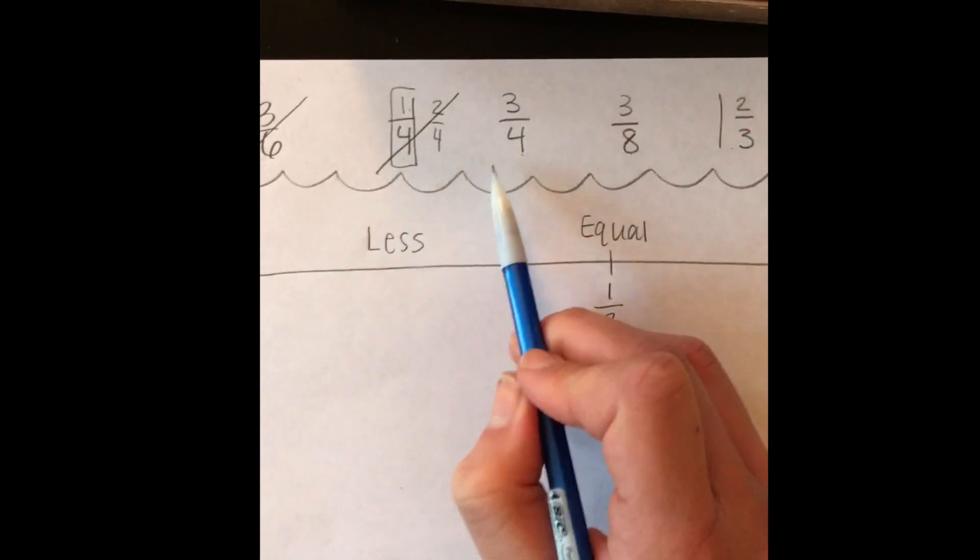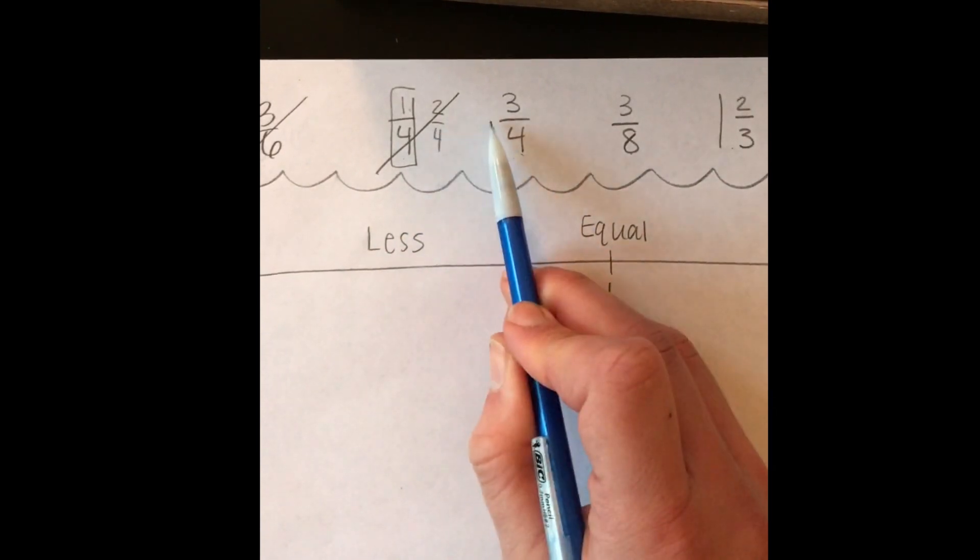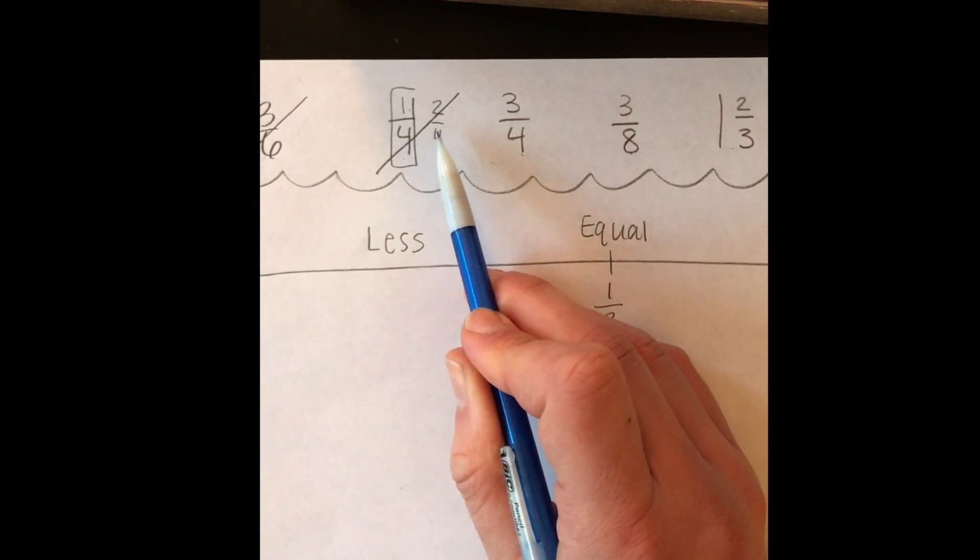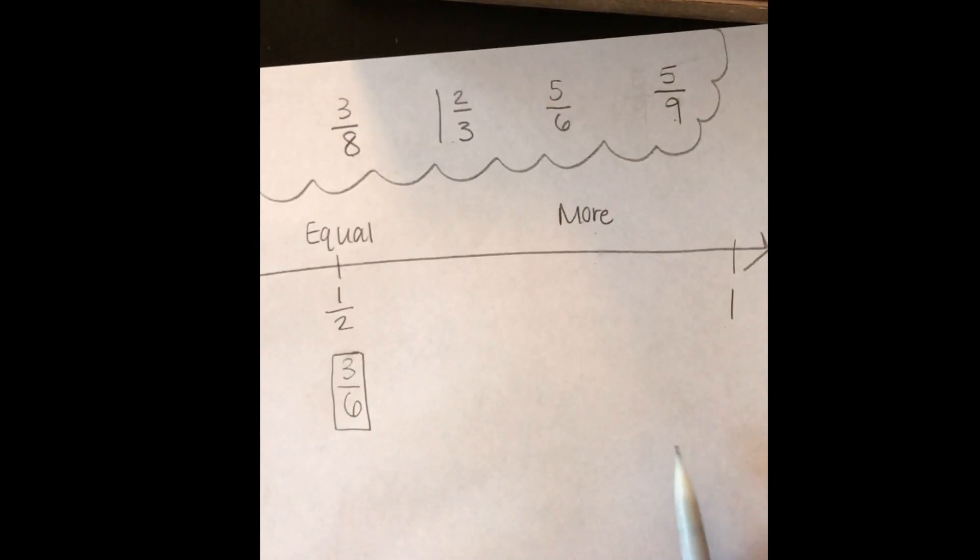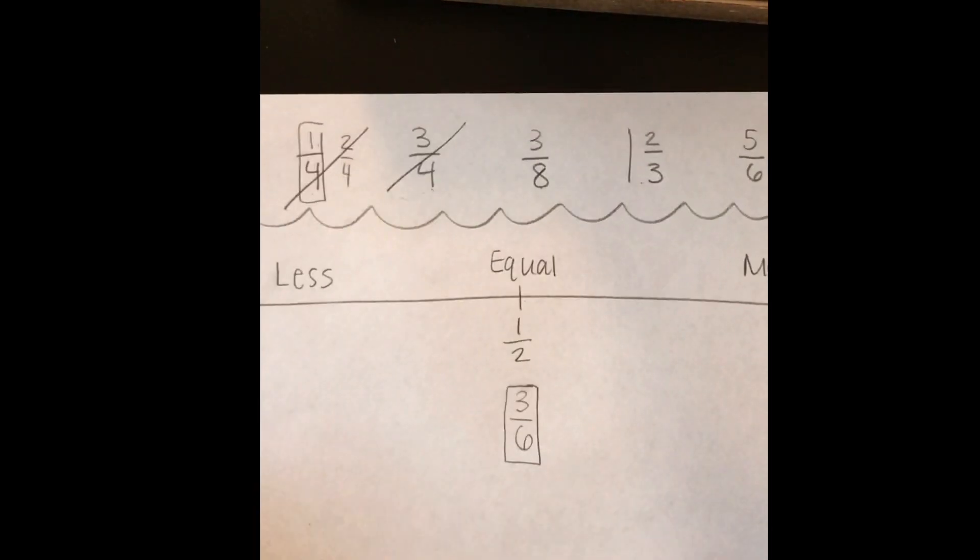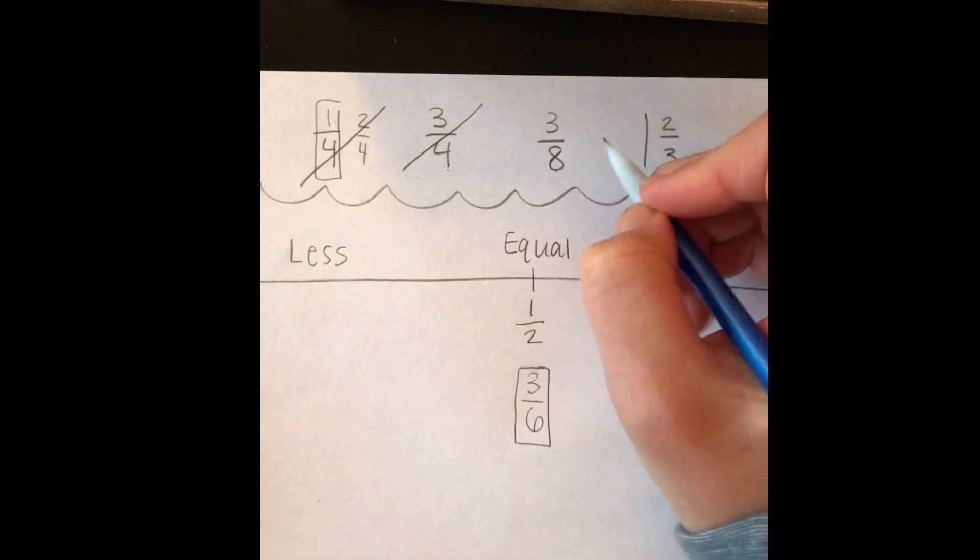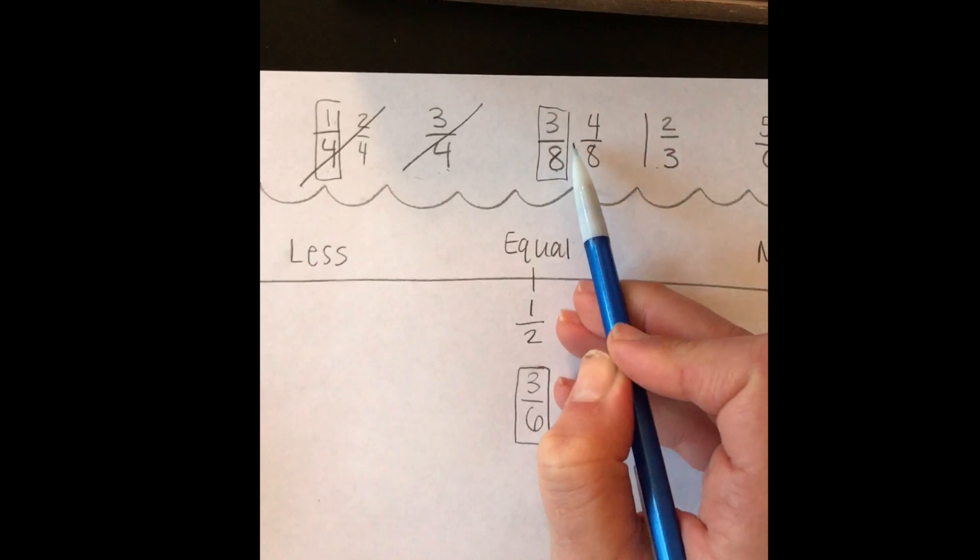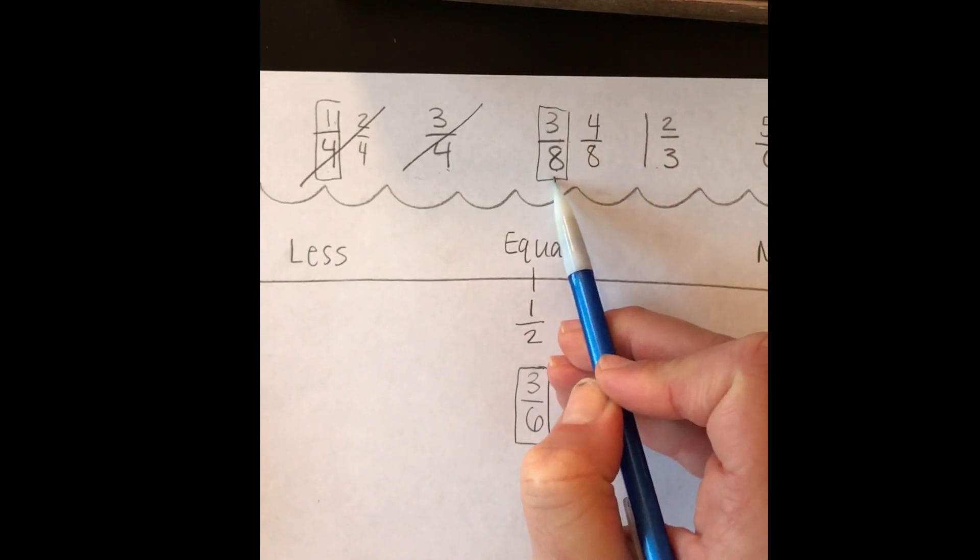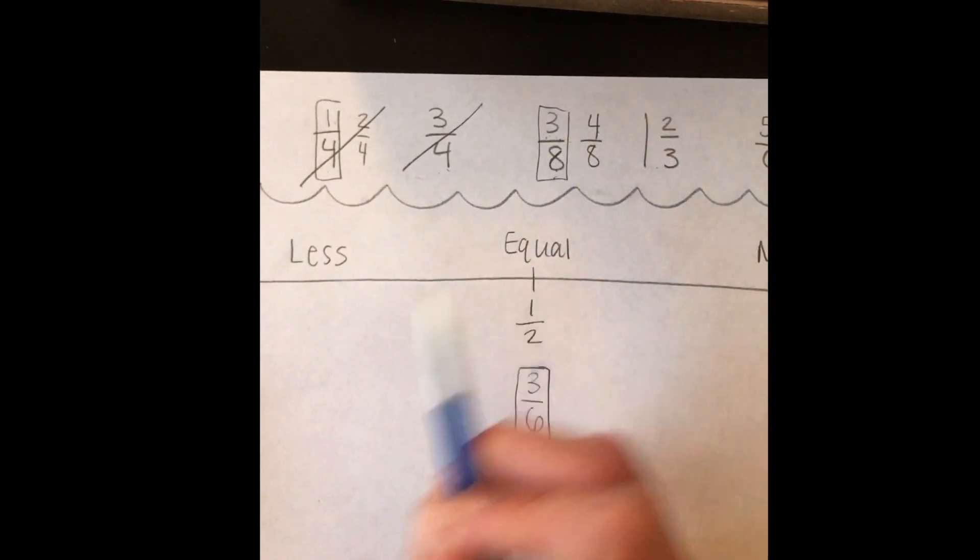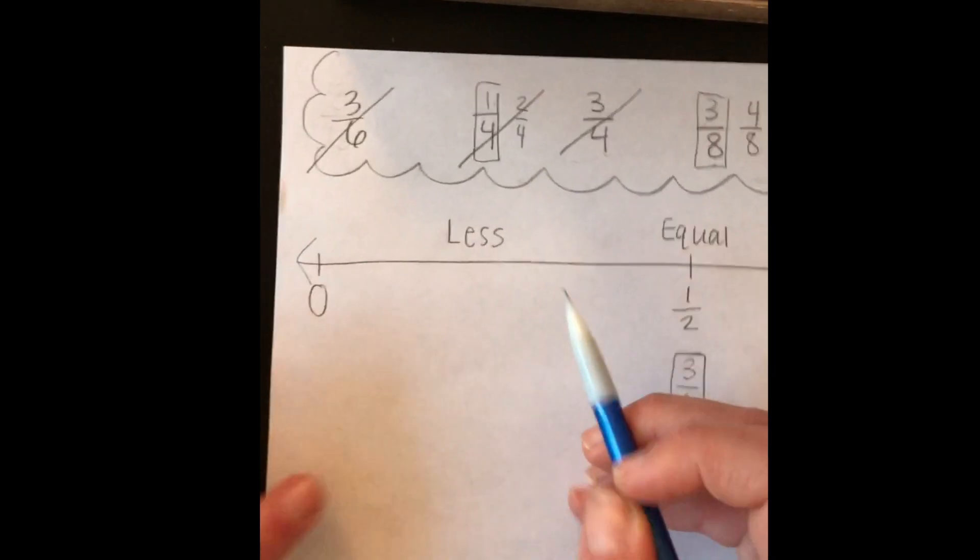We just talked about how half of 4 is 2. So if half of 4 is 2, 3 fourths is bigger because 3 is bigger than 2. So that is more than half, and I'm going to write it down below the number line on the more than half side. Our next fraction is 3 eighths. Using my doubles facts, I know that half of 8 is 4, so that means 3 eighths is less than half because 3 is less than 4. I'm going to write it on my less than half side down below the number line for now.